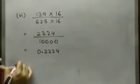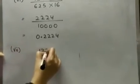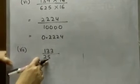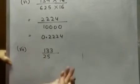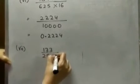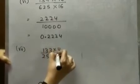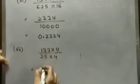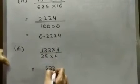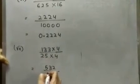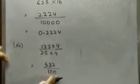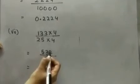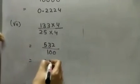Last example: 133 by 25. 25 multiplied by what number gives a power of 10? We know 10 is not possible, so we try 100. 25 multiplied by 4 gives 100. The same number 4 must be multiplied with the numerator: 133 multiplied by 4 is 532. So we get 532 by 100. There are 2 zeros, so the decimal shifts 2 places from right to left: the answer is 5.32.